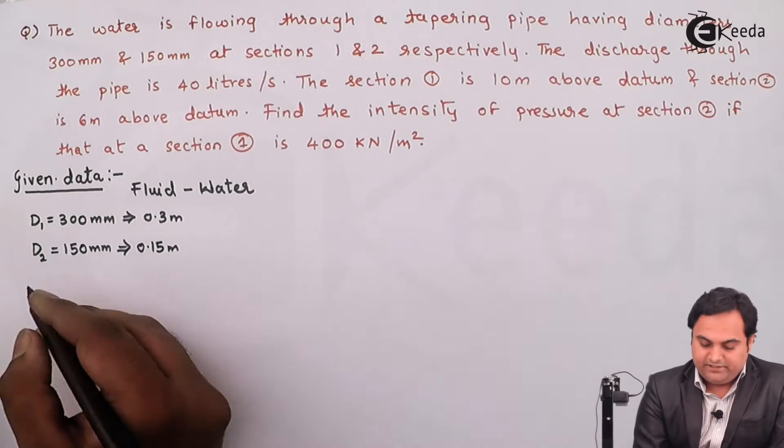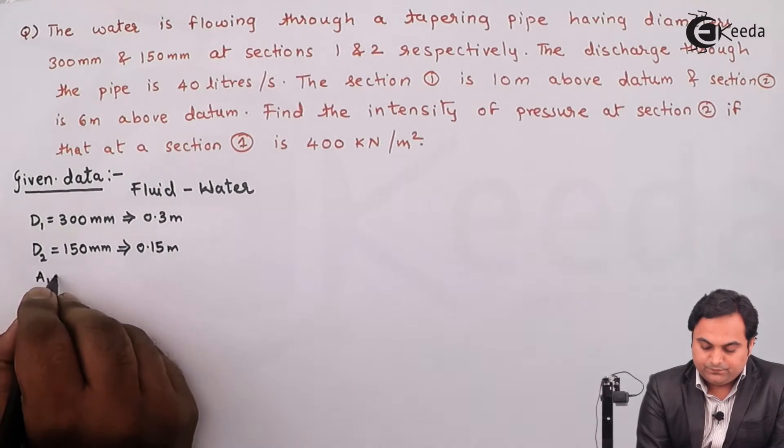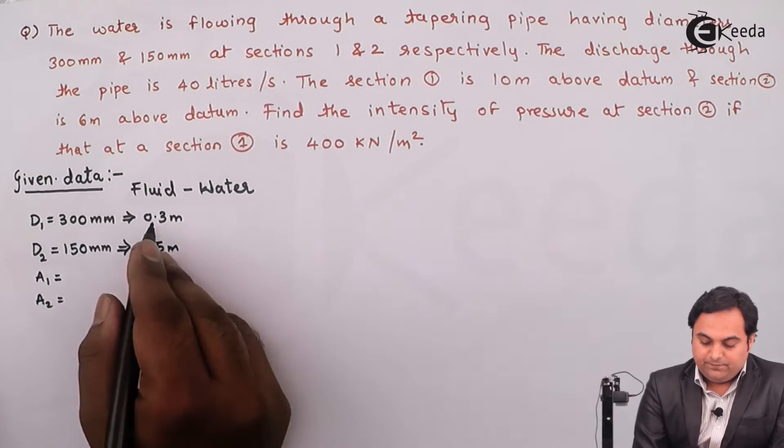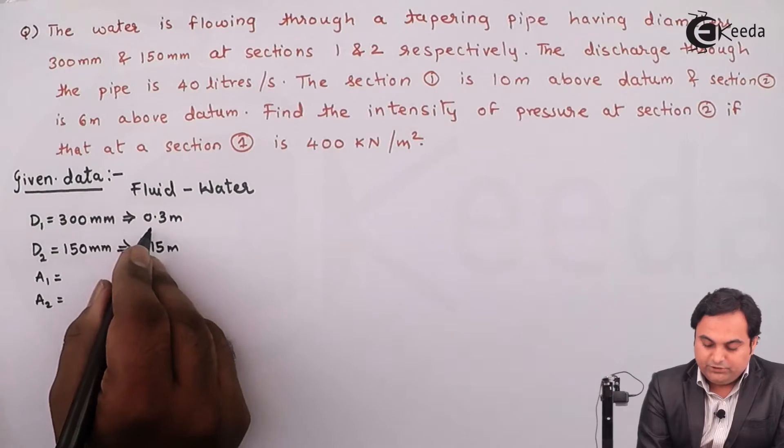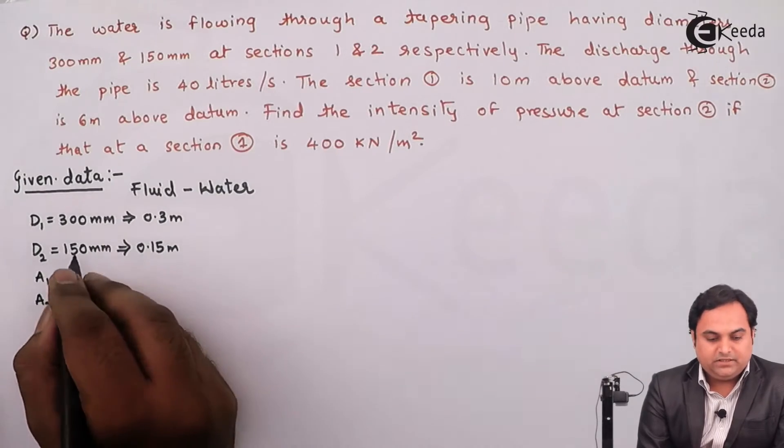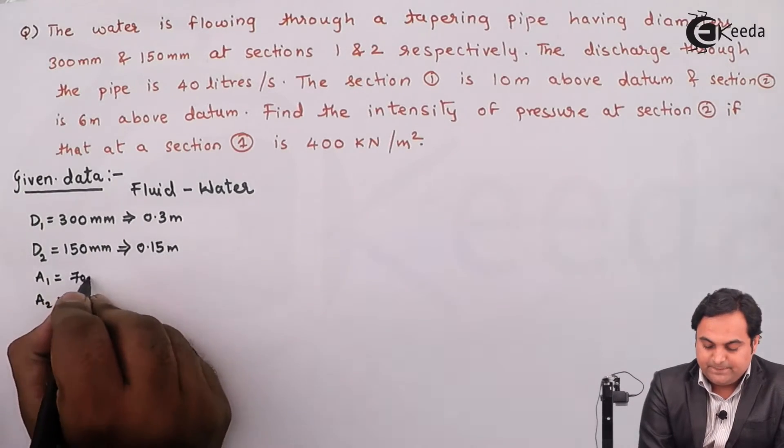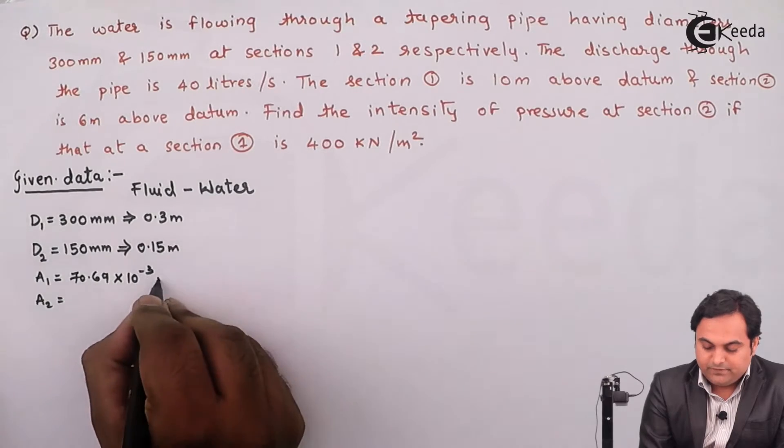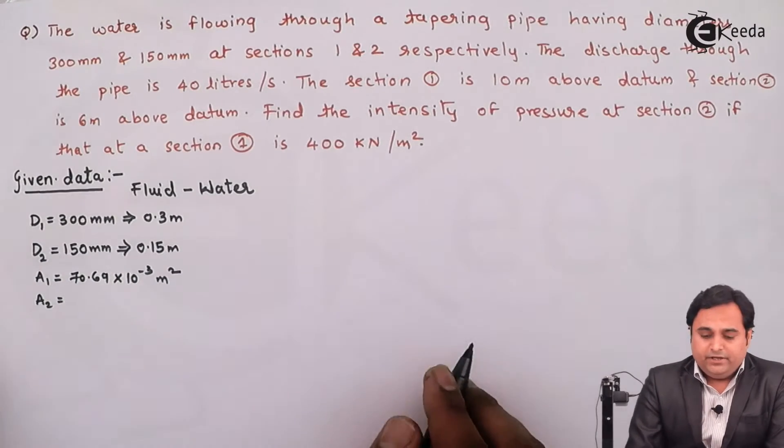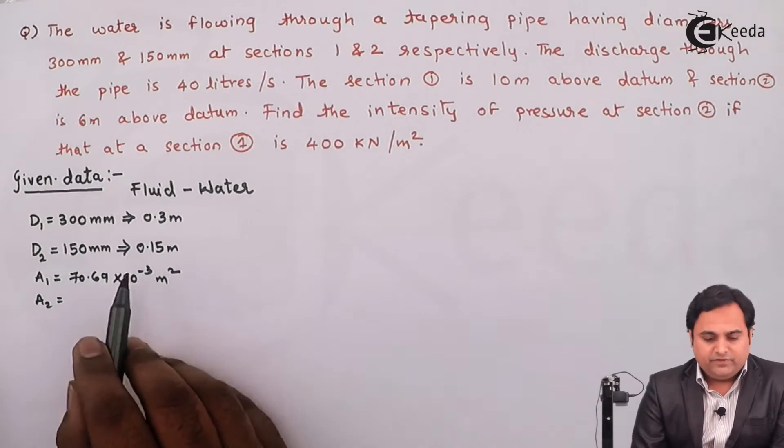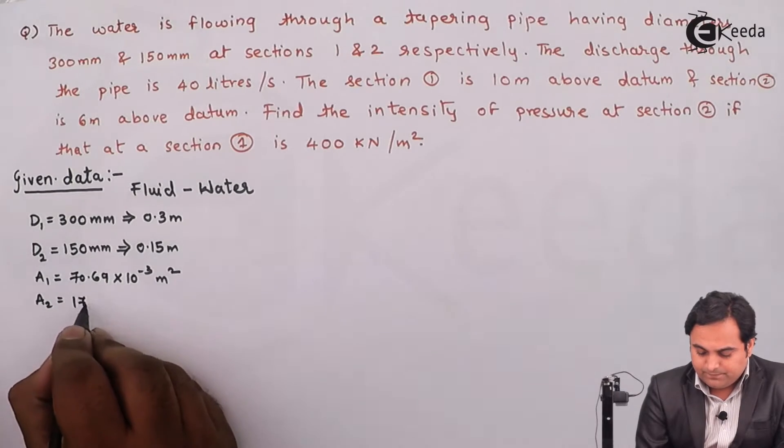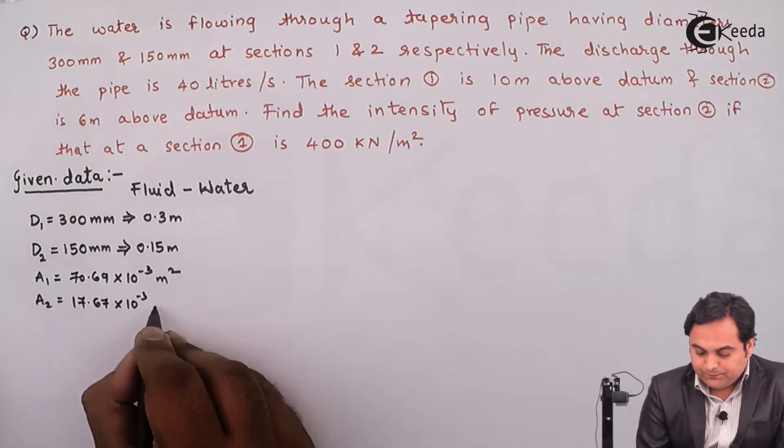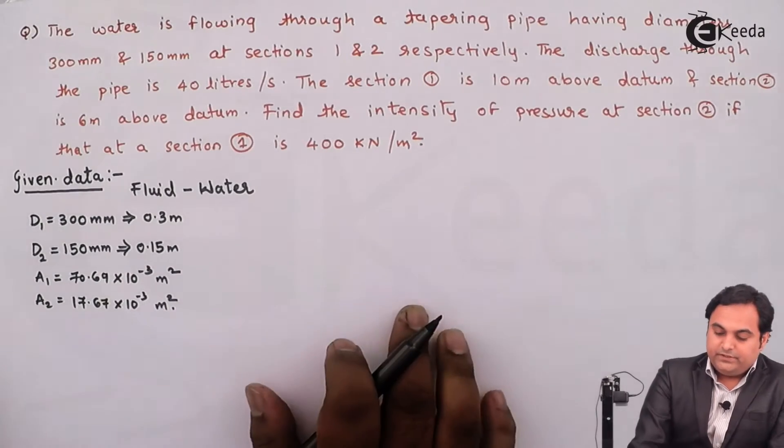So here I'll get area 1 and area 2. Area 1, when I calculate pi by 4 into 0.3 square, comes out to be 70.69 into 10 raise to minus 3 meter square. Area 2, pi by 4 into 0.15 square, is 17.67 into 10 raise to minus 3 meter square.